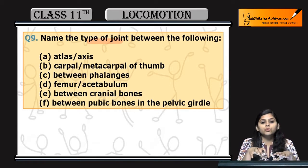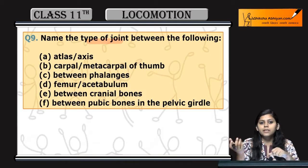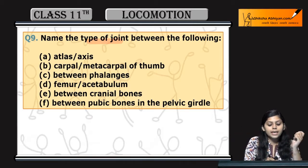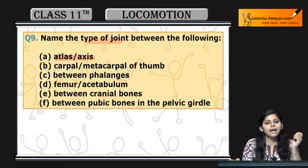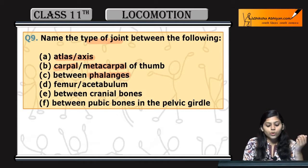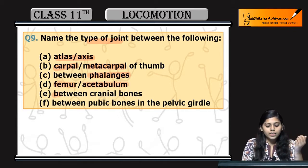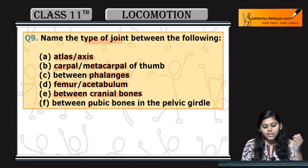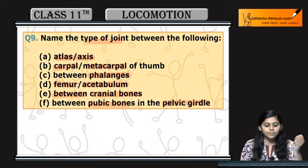Hame neche kuch bones di hai, hume unke beech ka joint patana hai ki koon sa hai. 1st one is atlas and axis, 2nd one is carpal and metacarpal of thumb, 3rd one is between the phalanges, 4th one is femur and acetabulum, 5th one is between the cranial bones, and last one is pubic bones in the pelvic girdle.